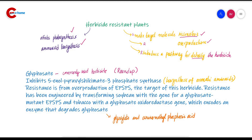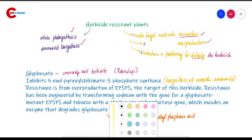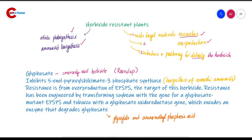Glyphosate inhibits 5-enolpyruvylshikimate-3-phosphate synthase, abbreviated as EPSPS. EPSPS is the key enzyme in the biosynthesis of aromatic amino acids in plants and bacteria.